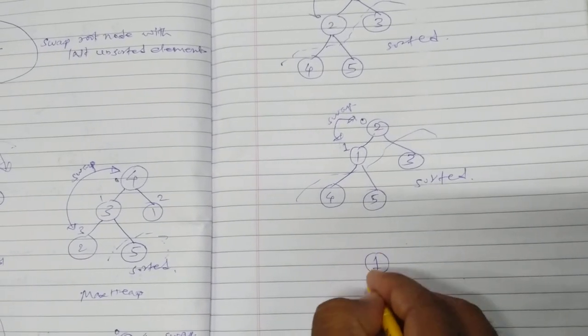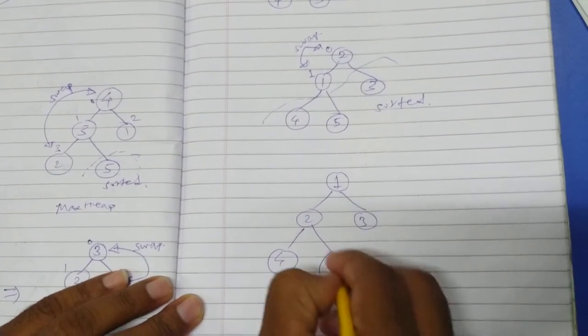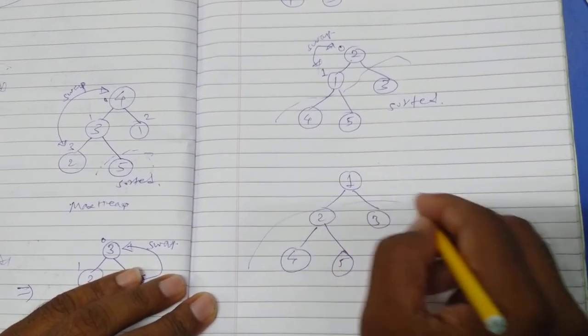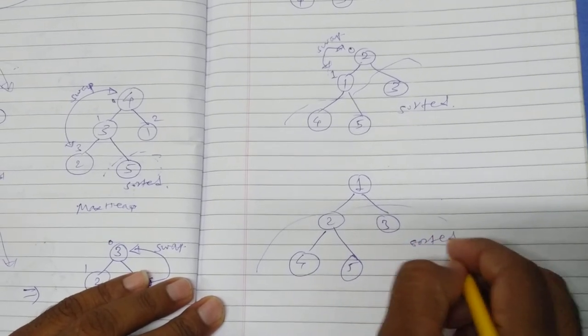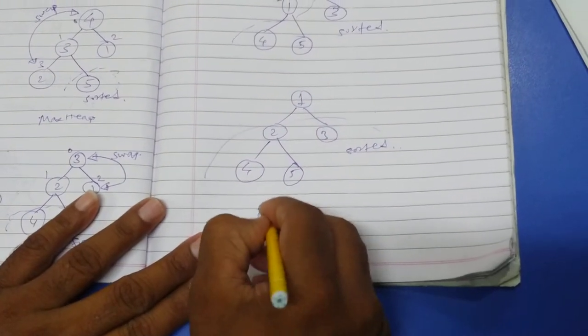It means in the last step we have to just do the swapping of these two elements, unsorted elements. One will go to the root node, two, three, four, and five. Now all the elements are now sorted. And this unsorted, there is no need to swap. So I can say that this is sorted.